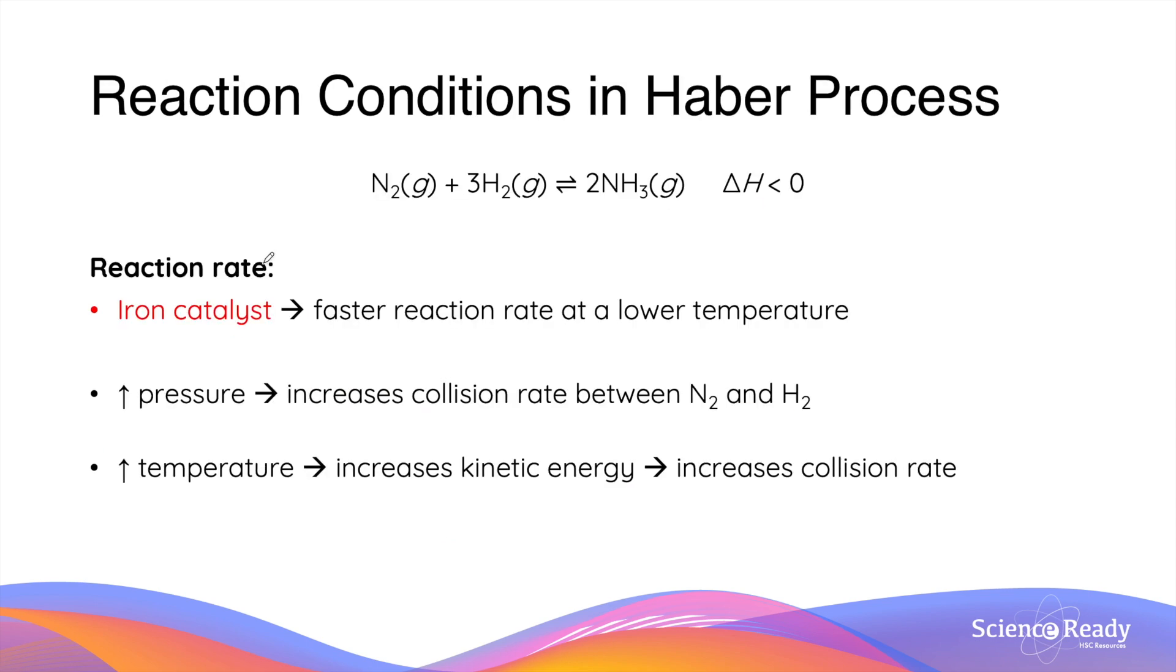The Haber process is a very good example to demonstrate how we can use various reaction conditions to optimize the chemical synthesis process of ammonia. As for the reaction rate of the Haber process, an iron-based catalyst is usually used to allow for a faster reaction rate at lower temperature. This not only increases the rate of the reaction but also minimizes the amount of energy that's required for the reaction.